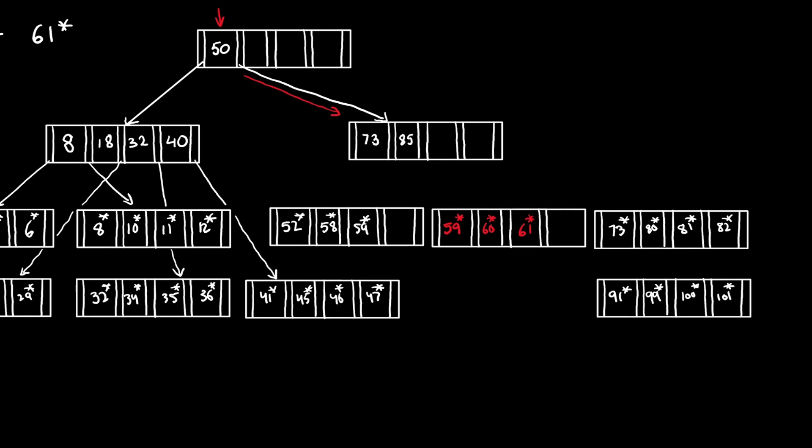Because we added a new entry, we need to update the parent entry. The new value in the parent entry will be the first value in the new entry. Since 59 is less than the current value of the parent entry, it will be inserted first.